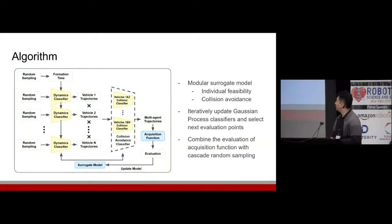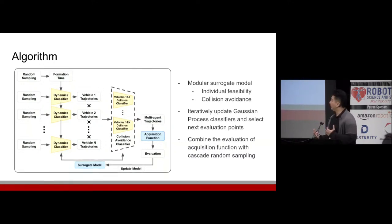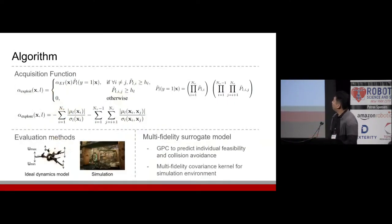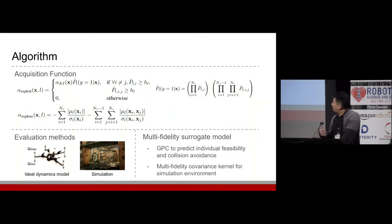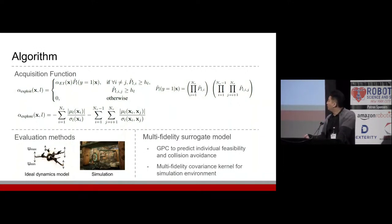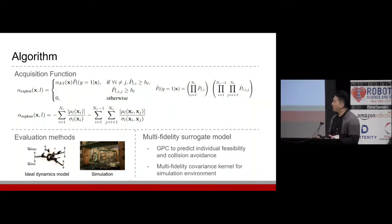Because of complicated quadrotor dynamics and noisy sensor data, the last two constraint types are uncertain and hard to model explicitly. So we utilize Bayesian optimization to find the optimal solution under uncertain constraints. Bayesian optimization selects the next evaluation point with an acquisition function and updates a surrogate model based on evaluation results. We propose a modular structure for the surrogate model, where each module approximates individual dynamic visibility and vehicle-wise collision avoidance using a binary Gaussian process classifier. To further improve sampling efficiency, we propose cascade random sampling: we first alternate candidate solutions for two vehicles, then sequentially find solutions for the next vehicle satisfying the formation timing constraint. For the simulated environment, we use multi-fidelity Gaussian processes combining low-fidelity evaluations.